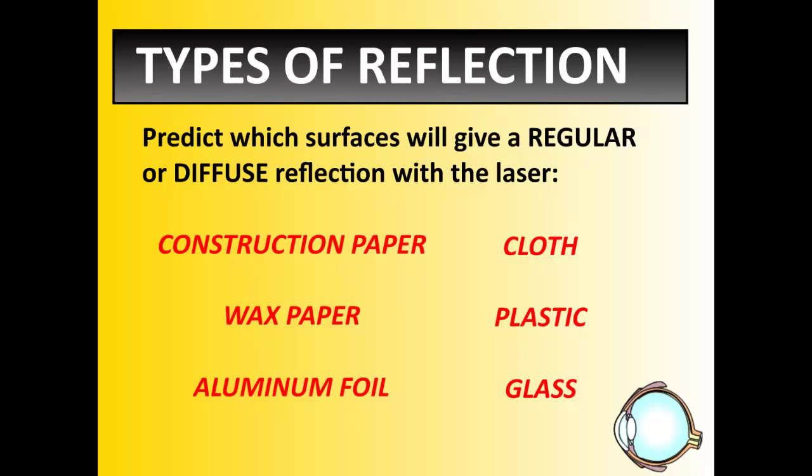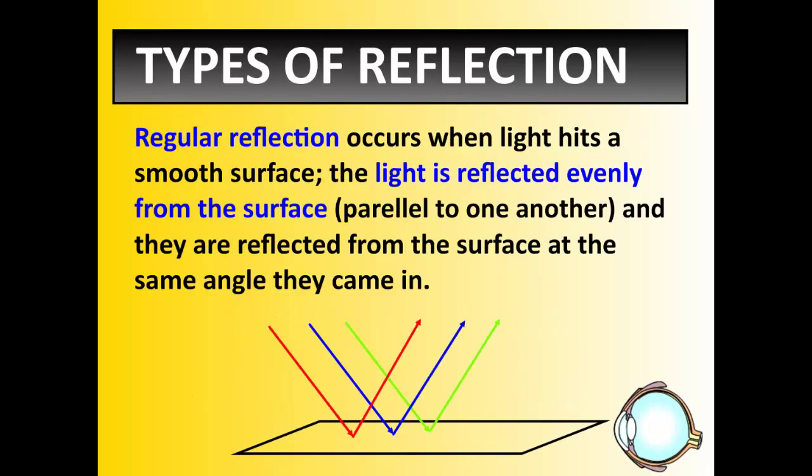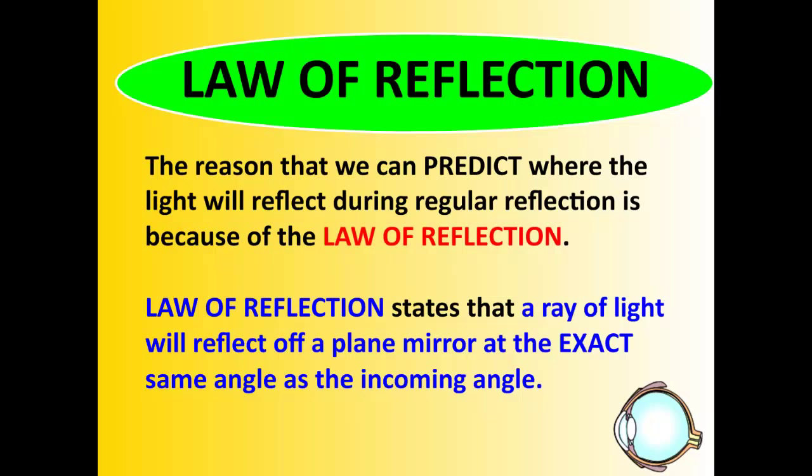Now, the reason that when we talk about regular reflection, the reason that this angle here, this incoming ray, is equal to this outgoing ray, is because of something that actually we see almost every day in many different scenarios, not just light, something called the law of reflection. The reason that we can predict where the light will travel, or where the light will reflect during any type of reflection, or even when you bounce a ball against the floor, the reason you can predict where it's going to bounce off of, is because of the law of reflection. And this states that the angle you shoot it at the ground, the ball for example, or the angle you shine the light at the mirror, it's going to reflect or come back away from the surface at the exact same angle. A ray of light will reflect off a plain mirror at the exact same angle as it comes in. A basketball will bounce off the floor, and leave the floor at the exact same angle it came in. Law of reflection.